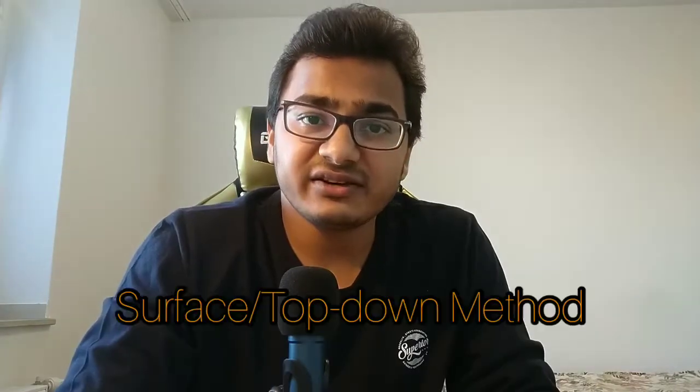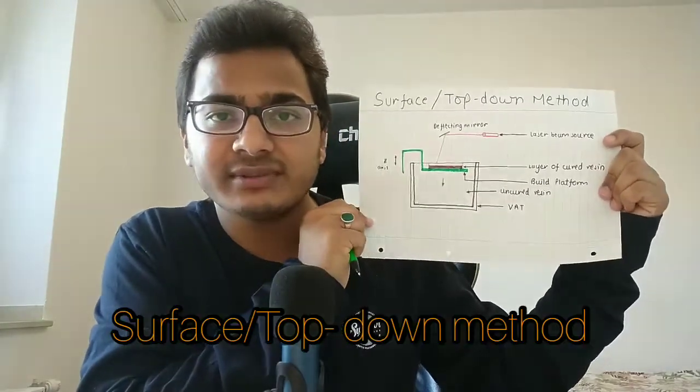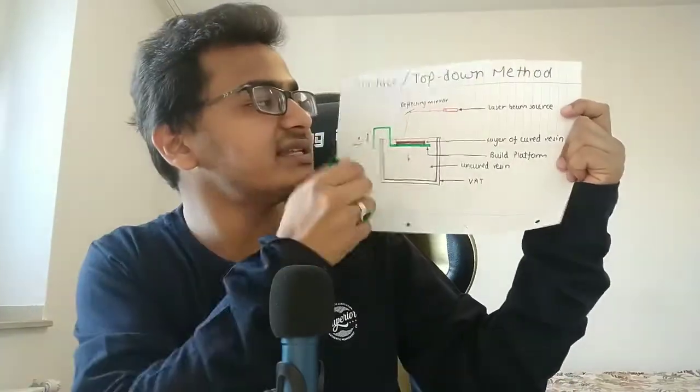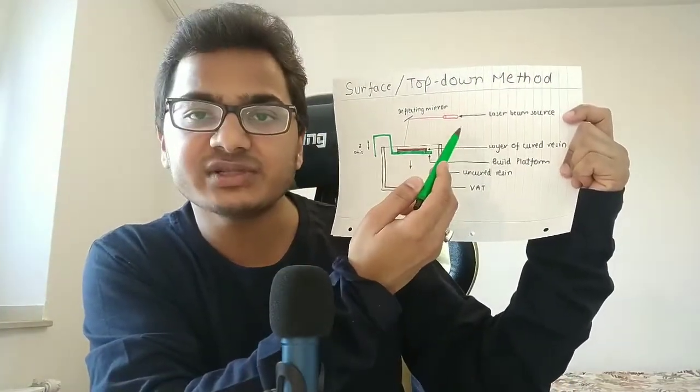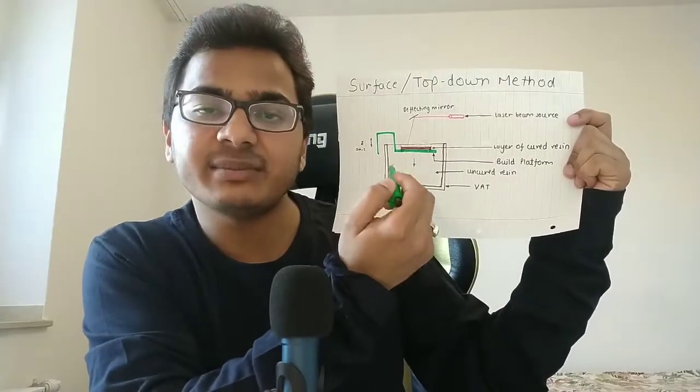The two types of machine setups are: first, the surface or top-down method, and second, the bottom-up method. This is the diagram for the surface or top-down method. I'll quickly go through all the components. As you can see, this is the laser beam source, this is the deflecting mirror, and the green portion represents the build platform.